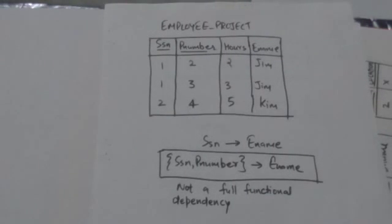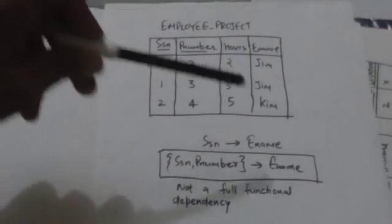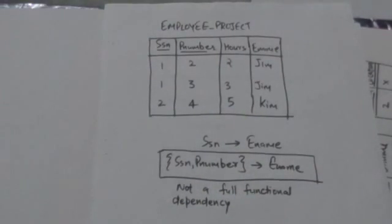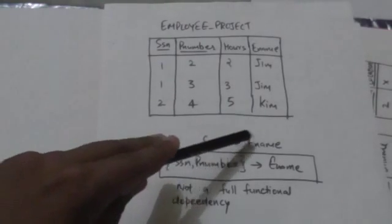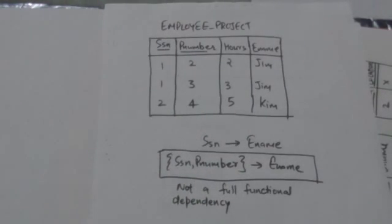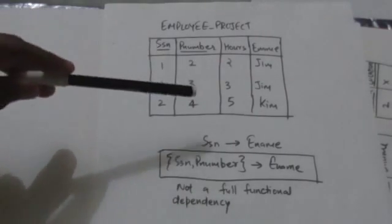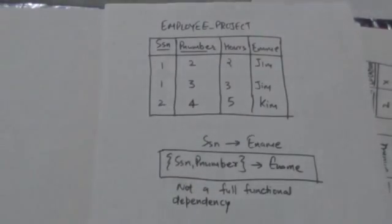This relation is in first normal form but not in second normal form because non-prime attribute ename is not fully functionally dependent on the primary key, since the functional dependency from SSN to ename holds.